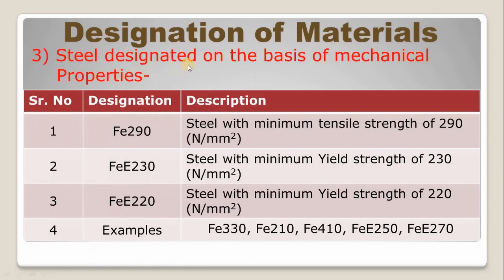The third category is designating material on the basis of mechanical properties for steel material. The mechanical properties include Young's modulus, tensile strength, yield strength, elasticity, ductility, and malleability. On the basis of these properties, we designate materials such as Fe 290. Fe indicates ferrous — it is a steel or ferrous material with a minimum tensile strength of 290 N/mm².